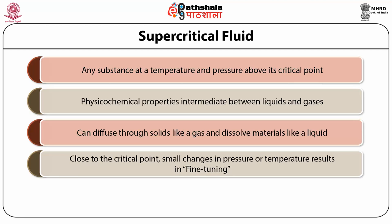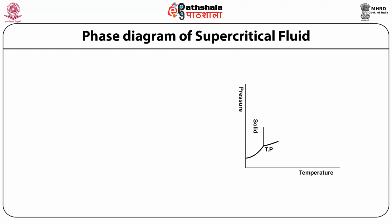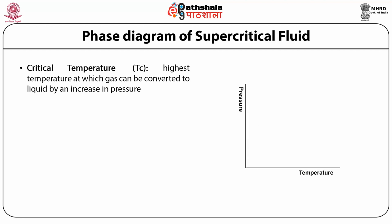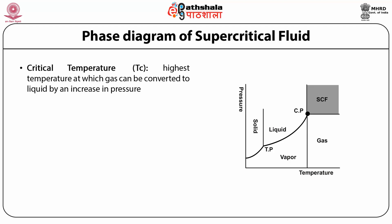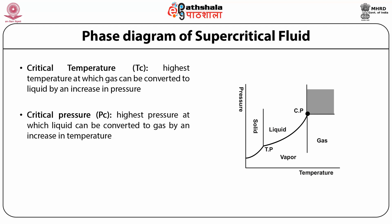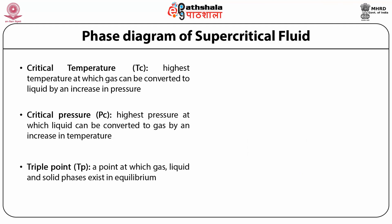The phase diagram of a supercritical fluid describes the critical temperature, critical pressure, and triple point. Critical temperature is the highest temperature at which a gas can be converted to a liquid by an increase in pressure. Critical pressure is the highest pressure at which a liquid can be converted to a gas by an increase in temperature. The triple point is a point at which gas, liquid and solid phases exist in equilibrium.